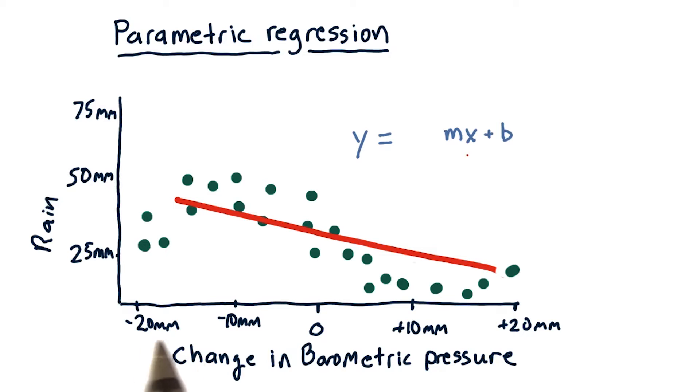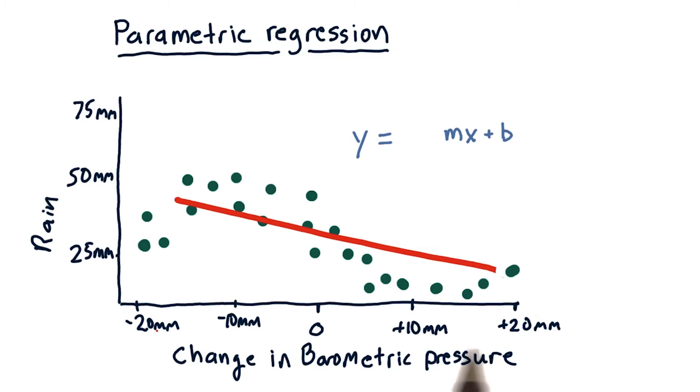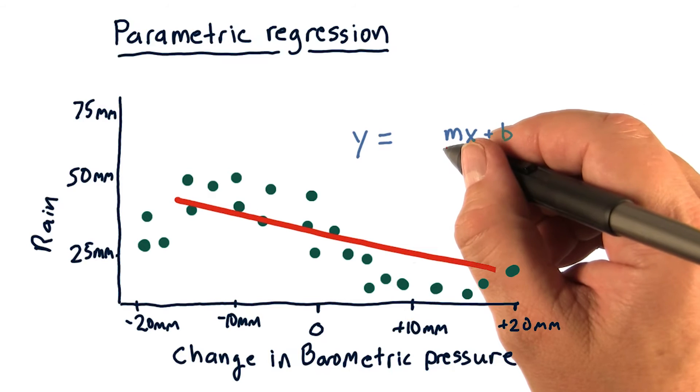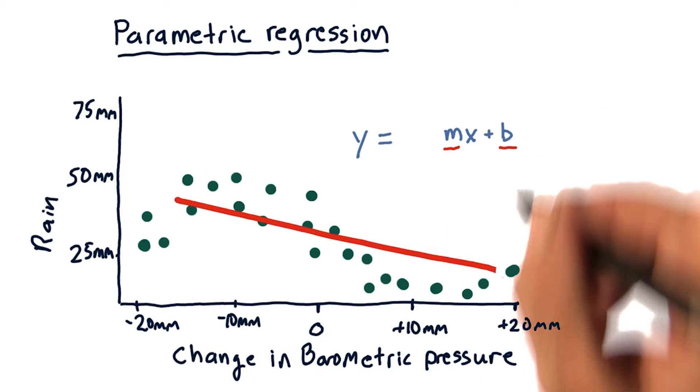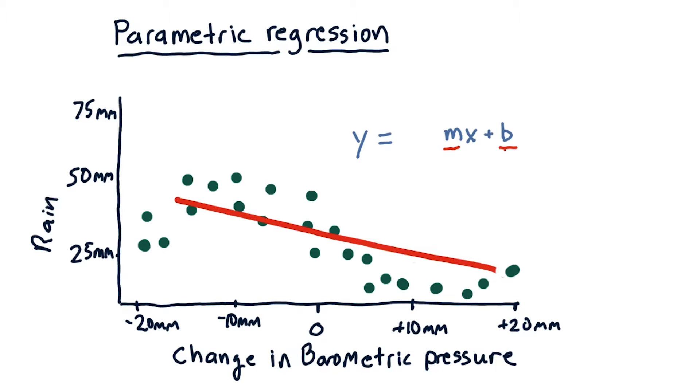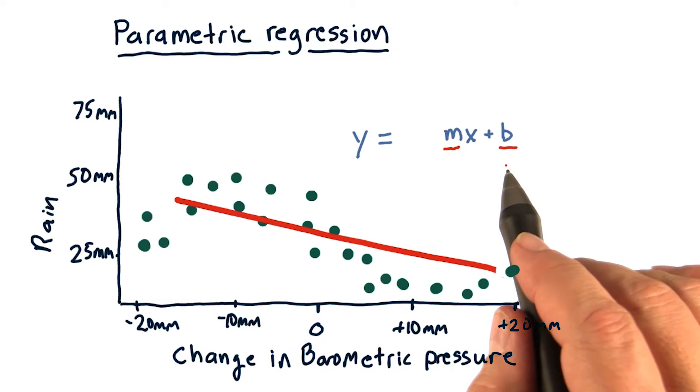So x is our barometric pressure change variable here, and m and b are the parameters of our model. Our model now is fully described by these two parameters.